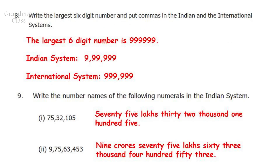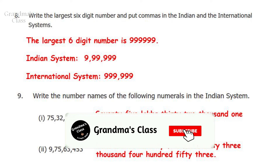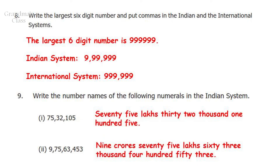Question 8: Write the largest 6-digit number and put commas in the Indian and international system. First we have to identify the largest 6-digit number, which is represented by 6 nines. In the Indian system it will be written as 9,99,999, and in the international system the same number is represented as 999,999.